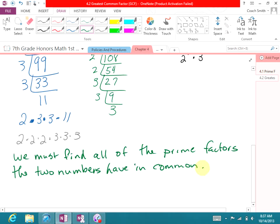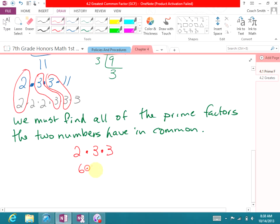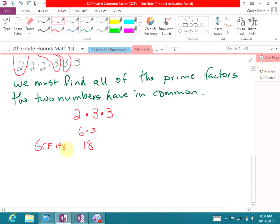To find the GCF, we must find all of the prime factors the two numbers have in common. So, if we do that, we've got a two, we have a three, and we have another three. So, the numbers that they have in common are two times three times three. Now, we simply multiply the two, the three, and the three together. Two times three is six times three is 18. So, the GCF of 198 and 216 equals 18.